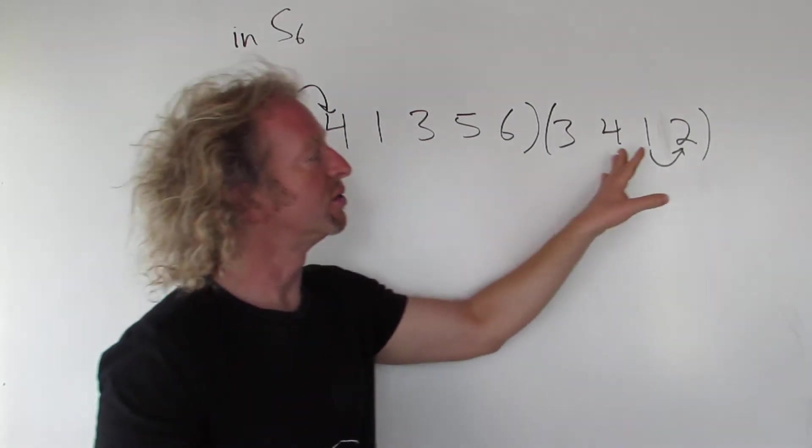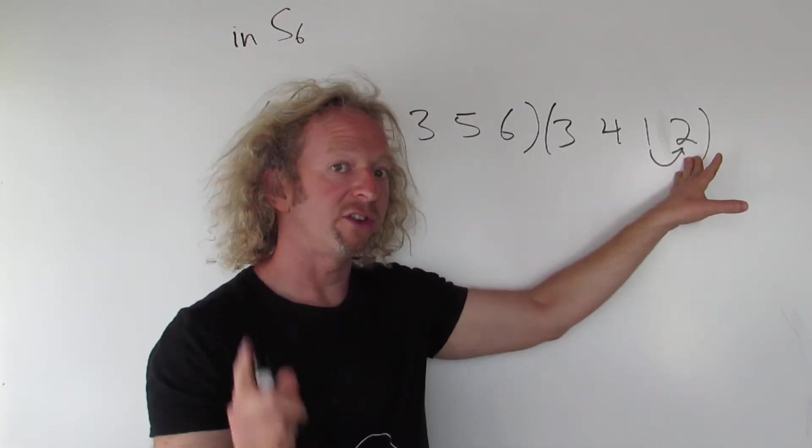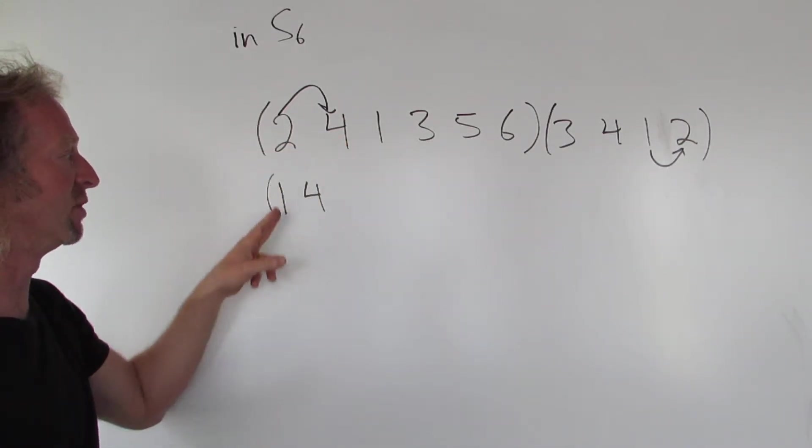Let me do that again. So one goes to two. Then you look over here for the two. Two goes to four. That means one goes to four.